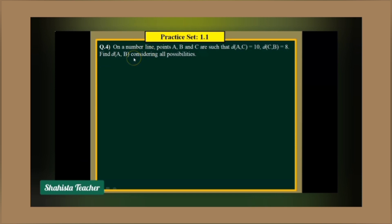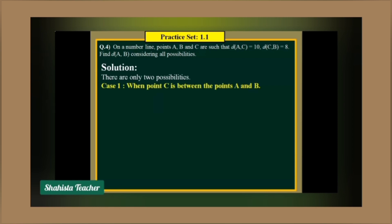Let's solve question number 4 of practice set 1.1. On a number line, points A, B, and C are such that the distance of AC is equal to 10, distance of CB is equal to 8, and we have to calculate distance of AB. There are two possibilities: Case 1, when point C is between points A and B, and Case 2, when point B is between points A and C.